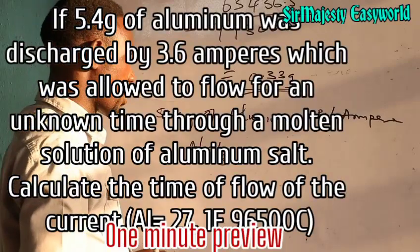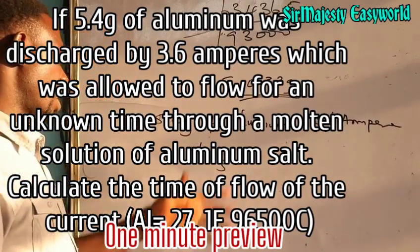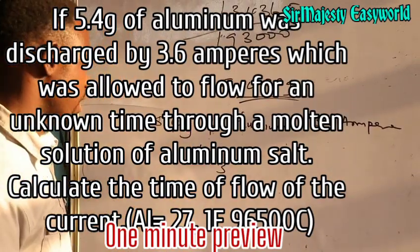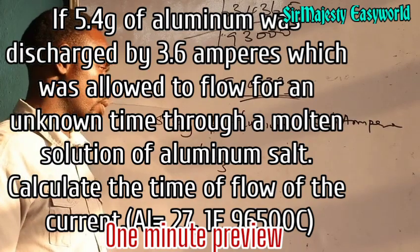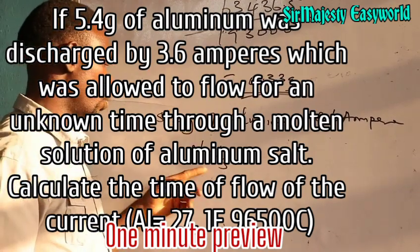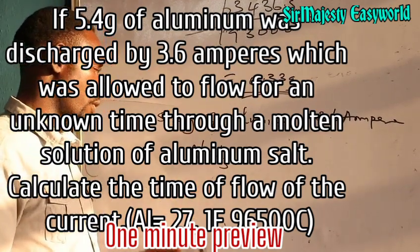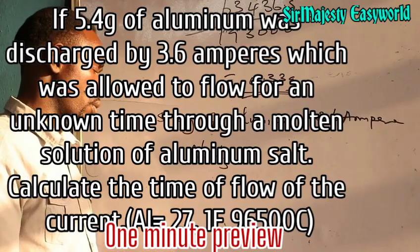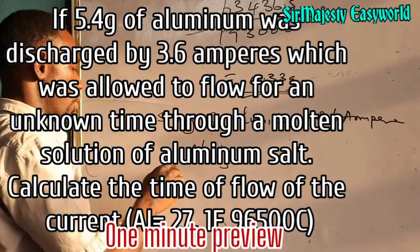This calculation states that 5.4 grams of aluminium was discharged by 3.6 amperes of current, which is allowed to flow for an unknown time through a molten solution of aluminium chloride. Calculate the time of flow of the current.